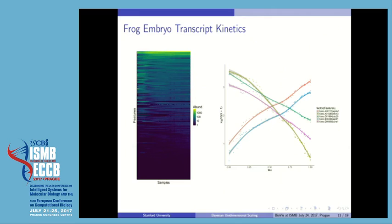The next plots are the heatmap of the data that has been reordered based on the coordinates our method estimated. The columns correspond to samples, and they have been ordered according to the tau coordinate that we have estimated.